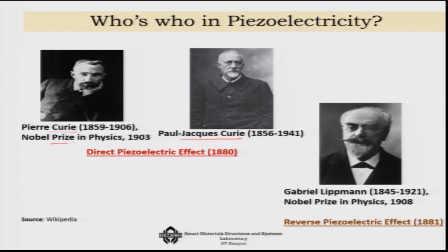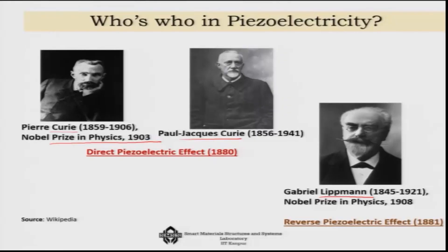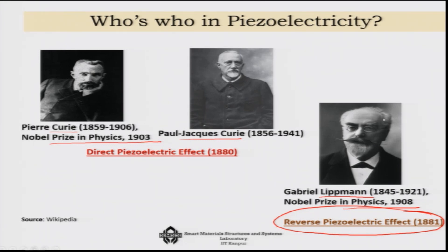They received the Nobel Prize in 1903 for this important discovery. Interestingly, Lippmann went through the whole thing and was the first person to develop the analytical relationships for the crystal structure. He theoretically predicted that if pressure can generate charge, then voltage can also generate deformation in these materials. That was experimentally verified, and he received the Nobel Prize in 1908 for the reverse piezoelectric effect, showing that applying an electric field causes a change in mechanical properties.